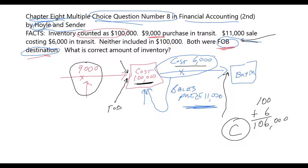The key, of course, is you have to know the FOB point and you have to know what that means. It's an important issue in reporting inventory in financial accounting. You can do it.